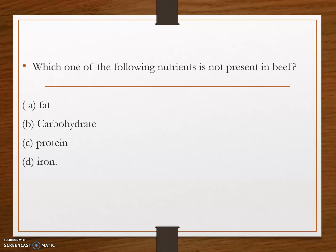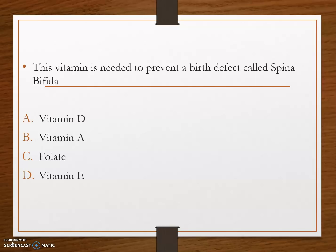Next question: which one of the following nutrients is not present in beef? Option A, fat; option B, carbohydrate; option C, protein; and option D, iron. The answer is option B, carbohydrate. Carbohydrate is the nutrient which is not present in beef.